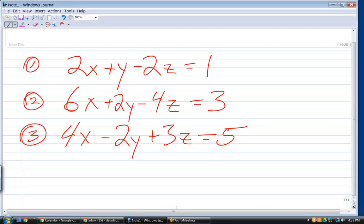What variable looks like it can be eliminated really easily? Y. Okay. By doing what? We're going to add two and three. So, we're going to add two and three. Okay. So, that's going to create equation number 4. What is that going to be? 10x minus z equals 8. Okay.